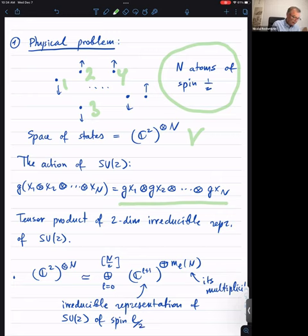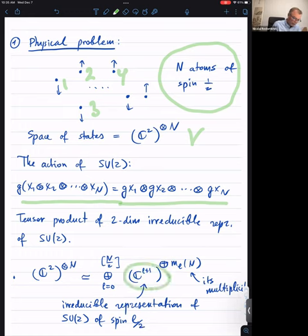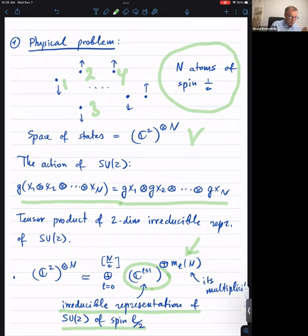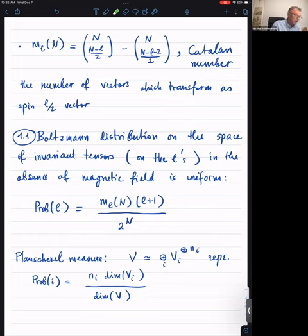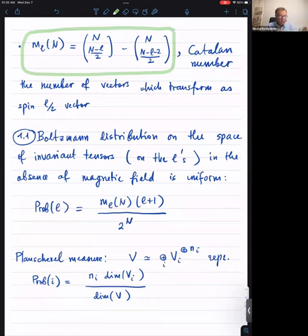SU(2) acts on ℂ² to the N diagonally. The tensor product of N two-dimensional irreducible representations of SU(2) decomposes into irreducible SU(2) modules of spin l/2, with multiplicity spaces that are also irreducible representations of the symmetric group by Schur-Weyl duality. For these and other combinatorial reasons, the multiplicities are given by a difference of binomial coefficients — one of these combinatorial reasons I will discuss when I talk about the connection with lattice paths.